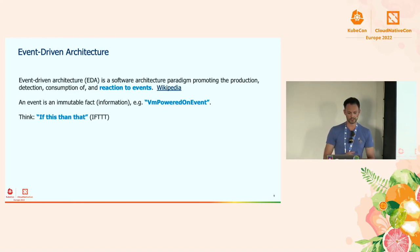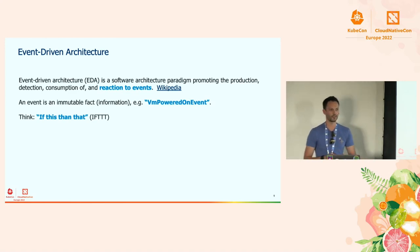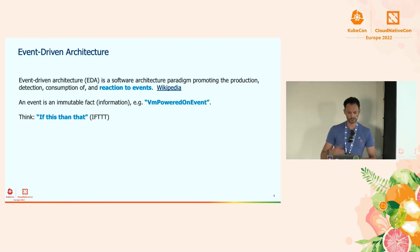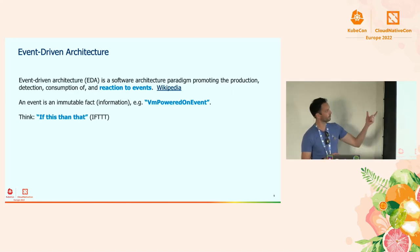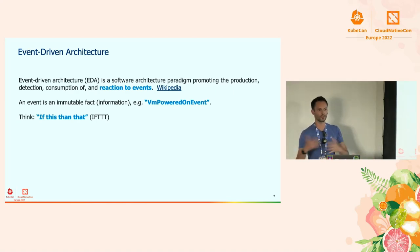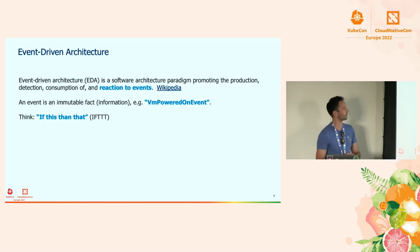Event-driven architecture promotes the production, detection, consumption, and reaction to events. The most important part is the reaction — something happens and you react to it. An event is an immutable fact, a kind of information. It's different from a message or a command in that an event is something you cannot change.